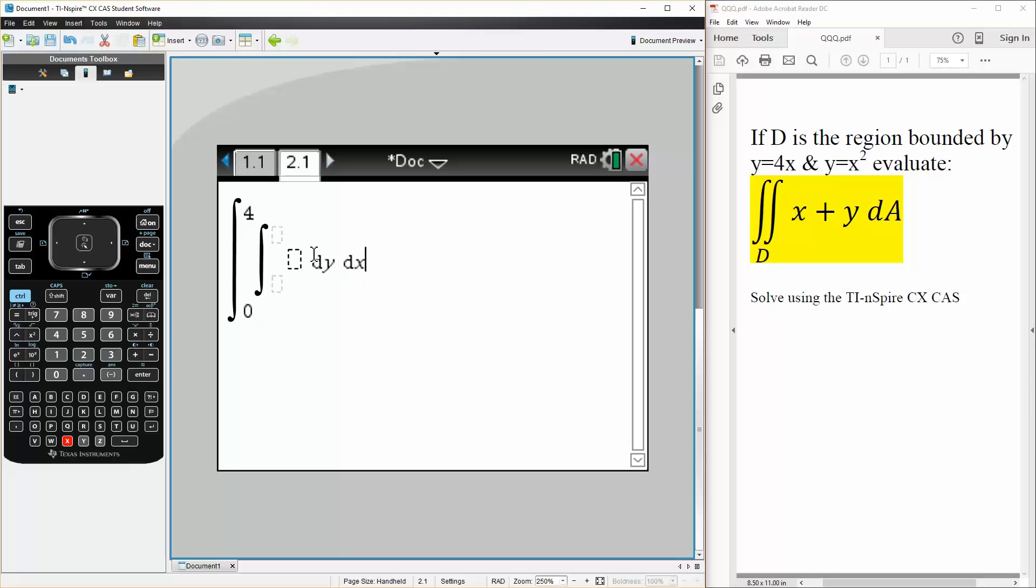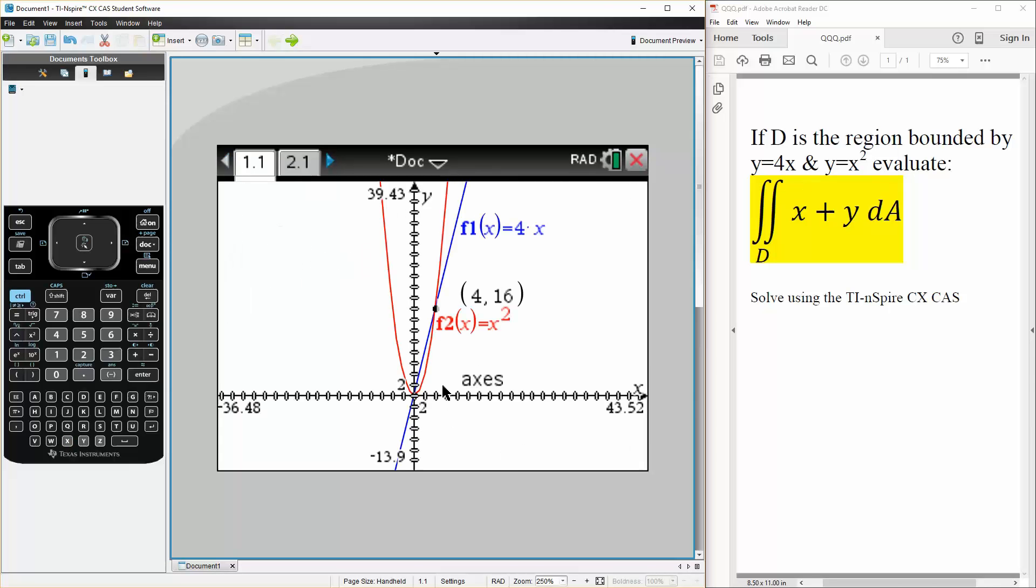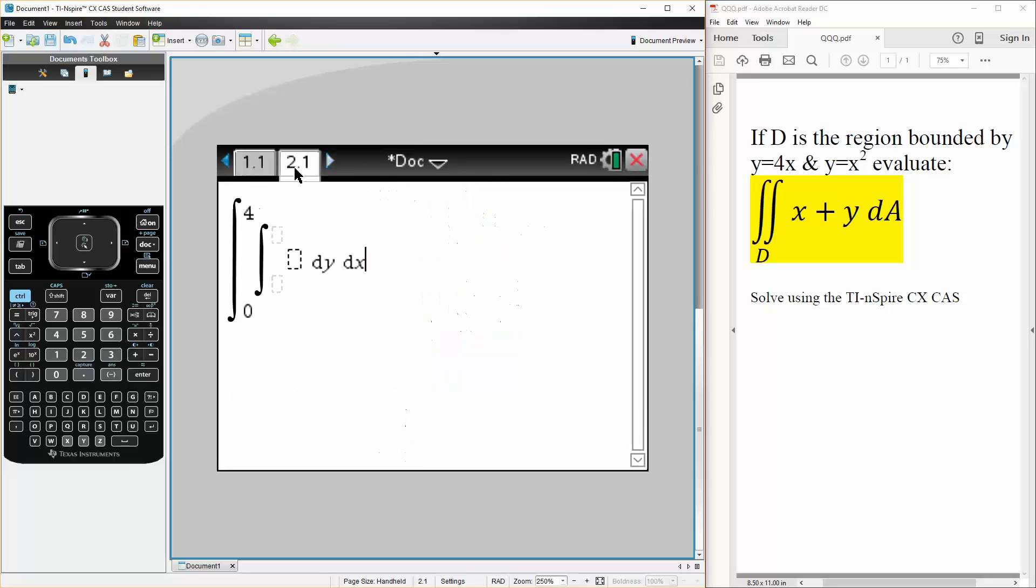And for dy, we would do the function. So the function 4x is in blue, and the function x squared is in red. And we know that the function 4x is above the function x squared. So we can say x squared would be the lower bound, and 4x would be the upper bound.